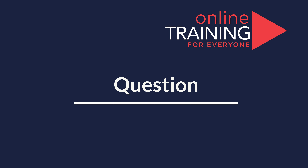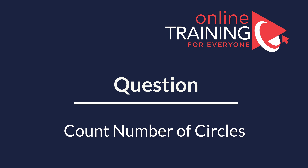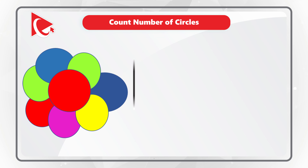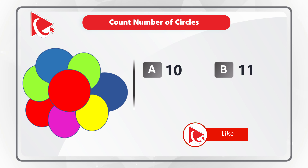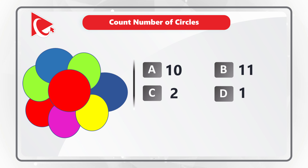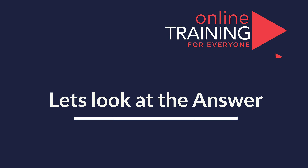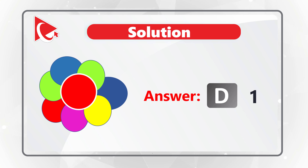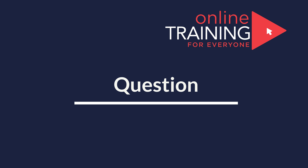In this interesting but tricky question, you need to count the number of circles. You're presented with an unusual shape and four choices: choice A 10 circles, choice B 11 circles, choice C 2 circles, and choice D 1 circle. As you might have figured out, there is only one circle in the middle — the other shapes are ovals of different kinds. Watch out for these types of unusual and tricky questions on the test.